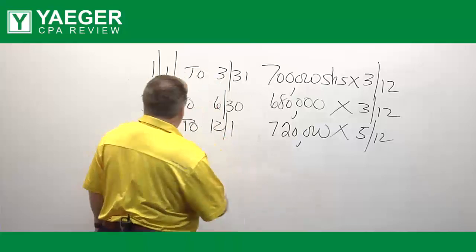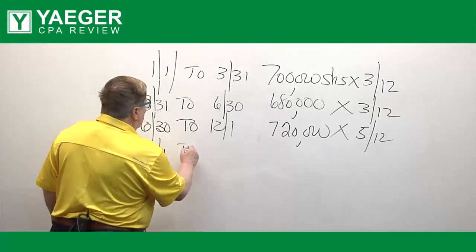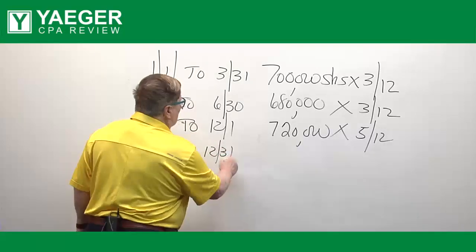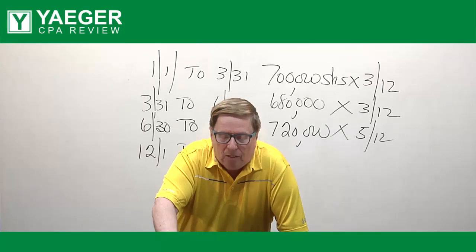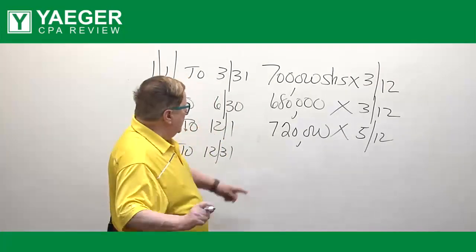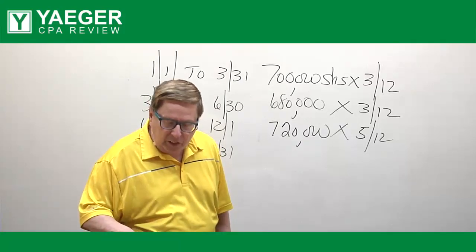And then what happened? From 12-1 to 12-31, what did we do? Well, we repurchased back 36,000 shares. So if we take 720 and we repurchased 36,000 shares.